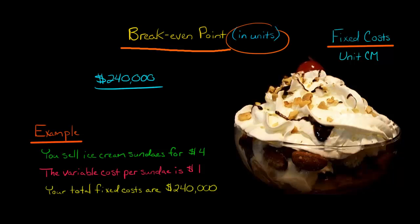We're going to have $240,000, then divide that by the unit contribution margin, or contribution margin per unit - it's the same thing. It's basically saying, every time you sell one of these ice cream sundaes, how much contribution margin do you generate? That's calculated by taking the $4 of sales revenue per sundae minus the variable cost per sundae. So that's $4 minus $1, which equals $3 - your unit contribution margin.